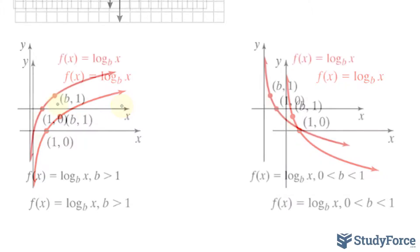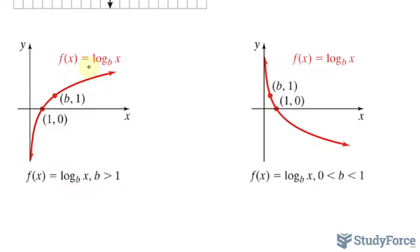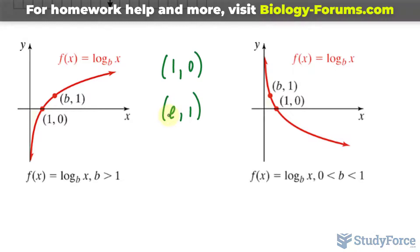So let me go ahead and plot that. From this, you can tell that you'll have a point at 1 and 0. So let me write that down, 1 and 0, that's for sure. We'll also have a point at b and 1. For us, b happened to be Euler's number, e. So e and 1, e is approximately 2.71. So just keep that in the back of your head.